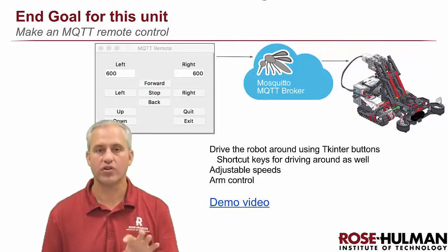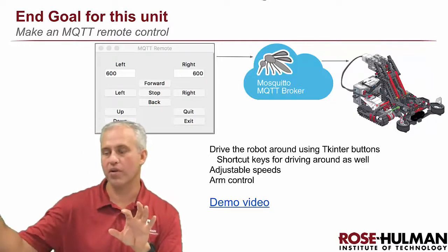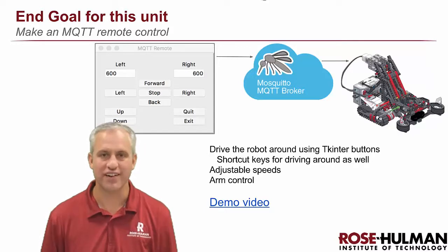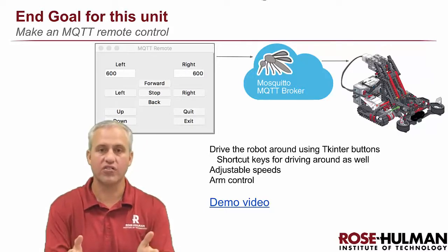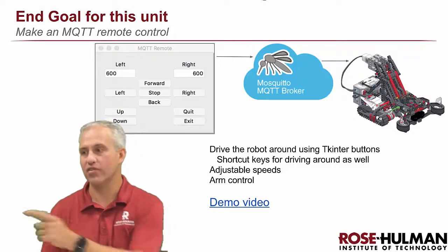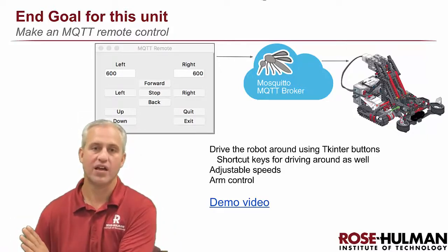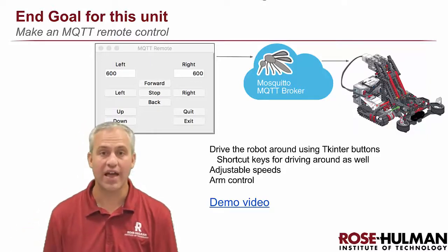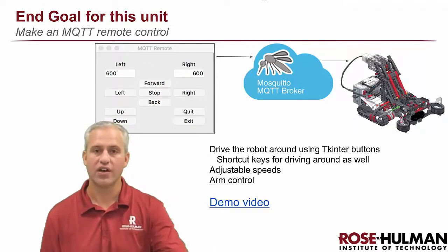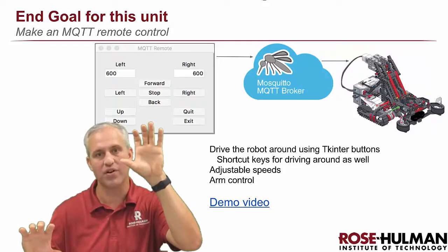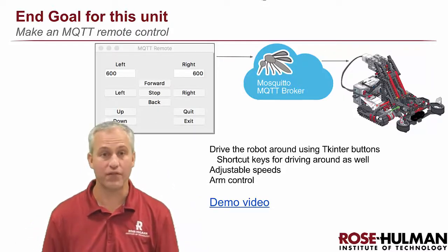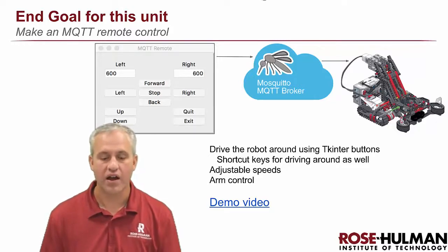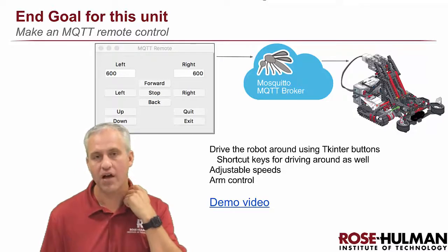My tip for this unit: when you have a program running on your computer and a program running on the EV3, I recommend using two different computers. It gets confusing when one computer is running tkinter talking to the robot, and also using SSH with the robot to start and stop programs. You can do it from one computer, but it's easier with two. That's my tip for the MQTT work.